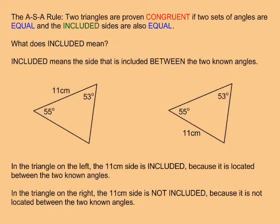In the triangle on the left, the 11cm side is included between the 55 degree and 53 degree angles. But in the triangle on the right, the 11cm side is not included.